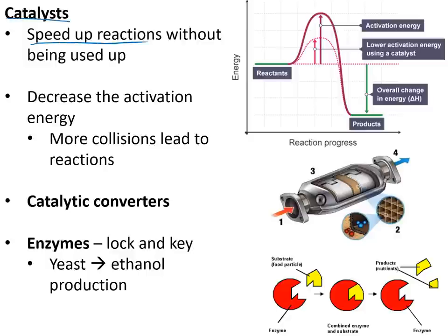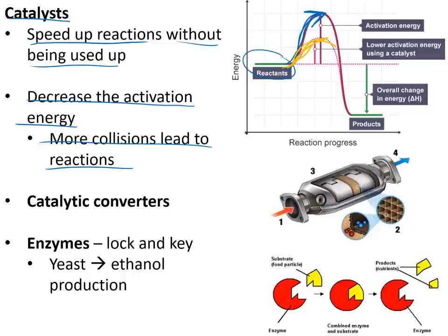Catalysts are substances that speed up chemical reactions without being used up. They work by decreasing the activation energy, meaning more collisions lead to reactions. On a reaction profile, the activation energy hump is lower with a catalyst. Important examples include catalytic converters in car exhausts to make exhaust gases less harmful, and enzymes, which work by the lock and key method — for example, enzymes in yeast used in ethanol production.